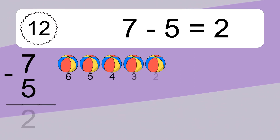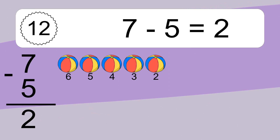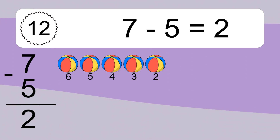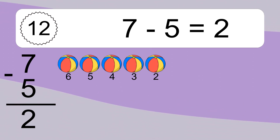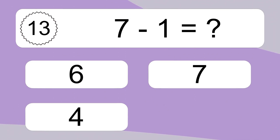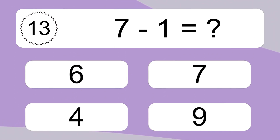7 minus 5 equals what? 7 minus 5 equals 2. Let's count it. 6, 5, 4, 3, 2.